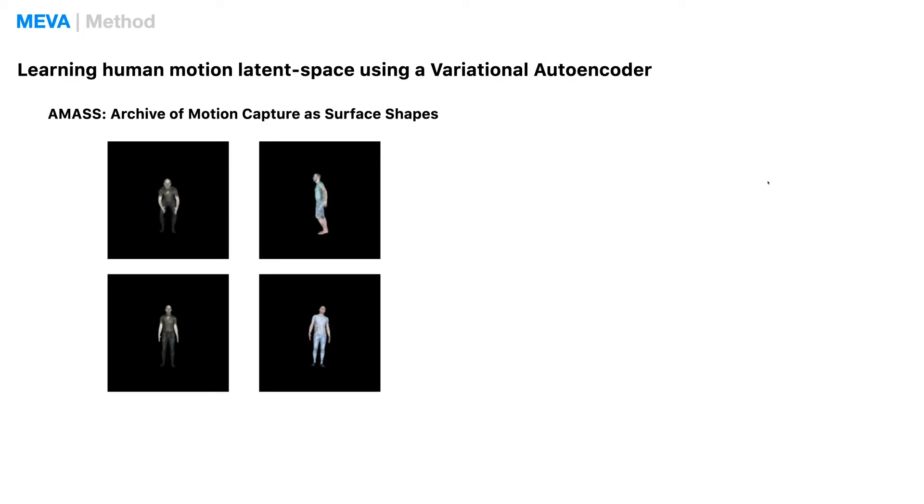To achieve this, we first learn a human motion subspace using a variational autoencoder from a large human motion database, AMASS.